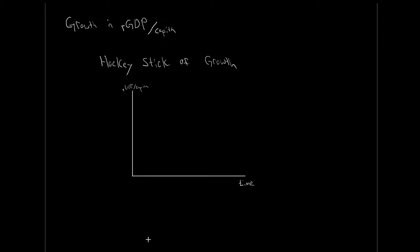The reason it's called the hockey stick of growth is because historically it's looked something like this: it's been relatively flat and constant, and then all of a sudden it started to shoot upward — almost like a hockey stick, with the stick, then the bend, and into the blade.